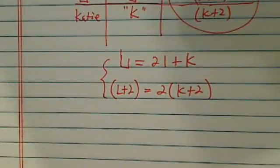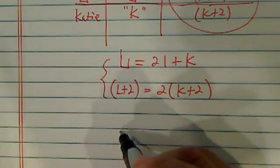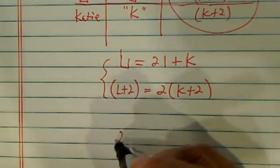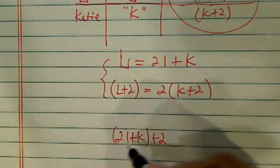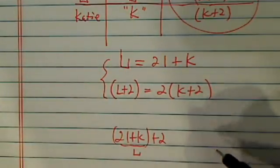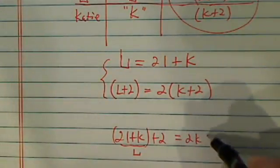Two equations, two unknowns. From here, it should be pretty easy to solve. So let's go ahead with it. We're going to use substitution. So 21 plus K plus 2, this is my L part, right, is equal to 2K plus 4.